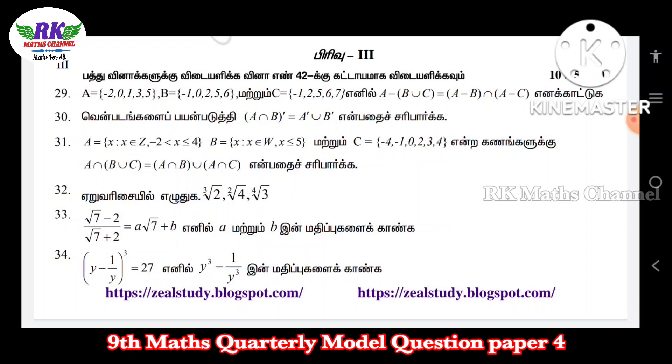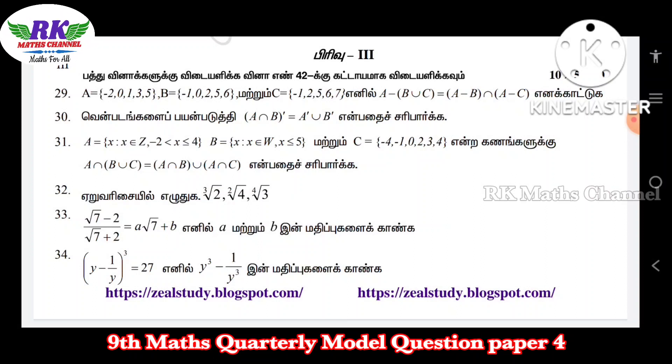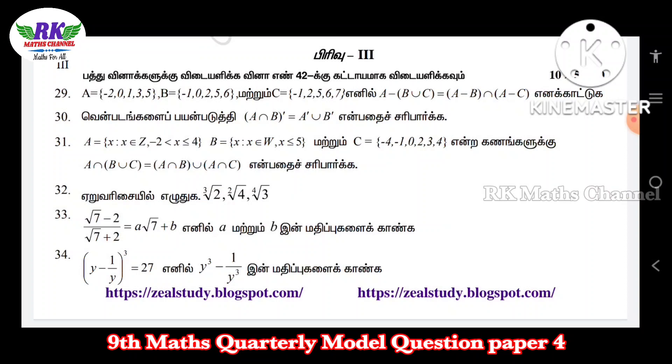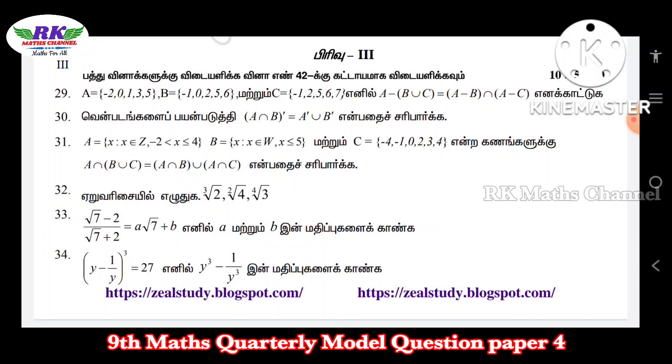Question number 31: same but different operation — A intersection B union A.